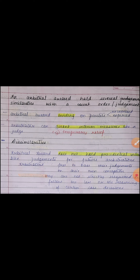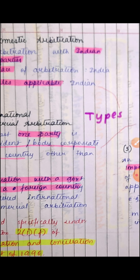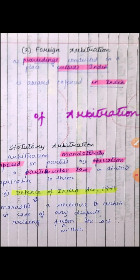Types of arbitration: First, domestic arbitration — arbitration within India, with Indian parties, governed by Indian laws. Second, foreign arbitration — proceedings conducted outside India (for example, in Switzerland), but the arbitral award is to be enforced within the country.